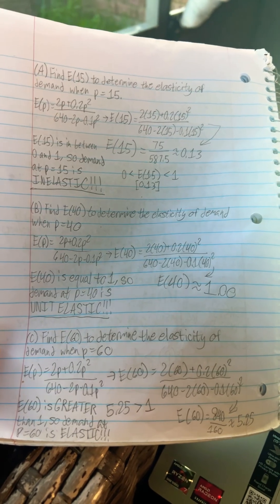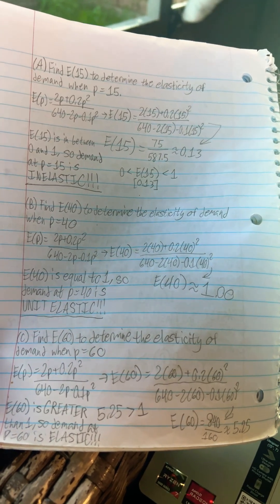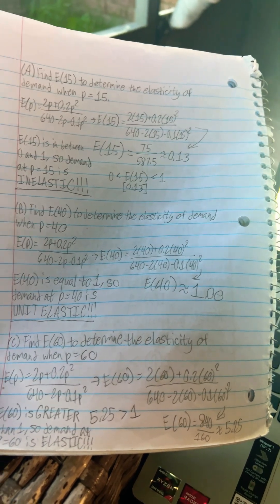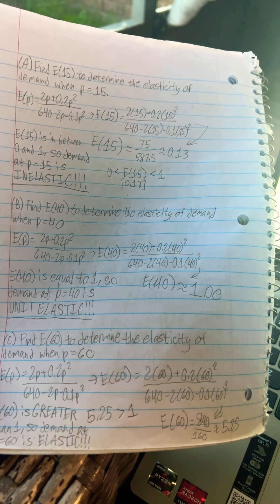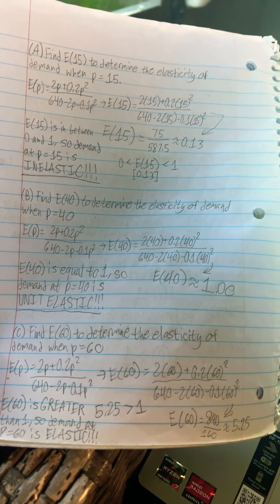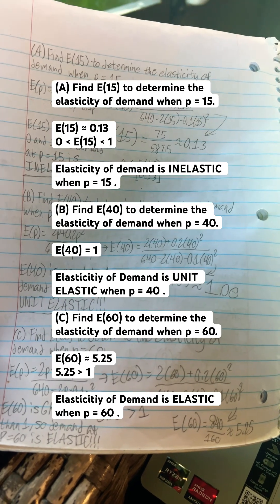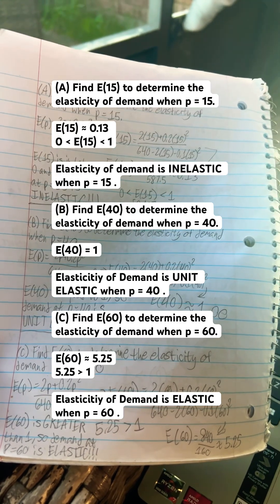Then you do the same process for parts B and C. You'll find that in part B, demand at P equals 40 is unit elastic because E of 40 is approximately equal to 1. And for part C, it's approximately equal to 5.25. If it's greater than 1, then it's elastic. So, there you go.